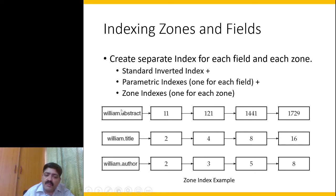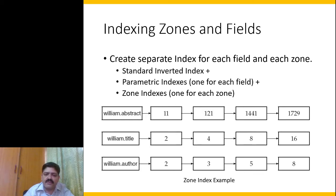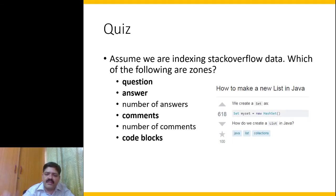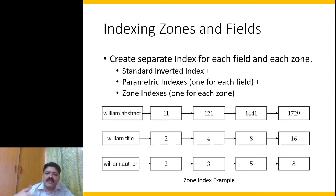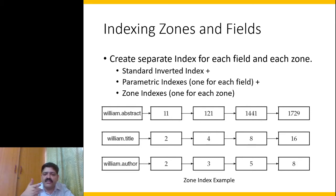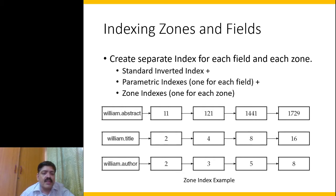Similarly, we could have a parametric index for each field. A parametric index is simply an index with a parameter you can search with — for example, the date of creation as a field. When a query comes in, we match against that field, such as finding questions answered within the last 15 days. These kinds of queries can be answered using parametric indices.